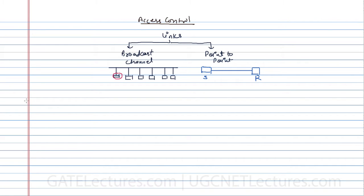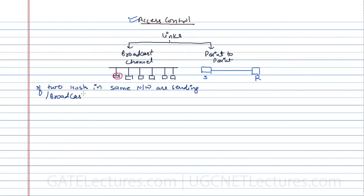If two computers in the same network are sending or broadcasting data at the same time, there might be a collision. That is when we discuss access control. If two hosts in the same network are sending data at the same time, there may be a possibility of collision.